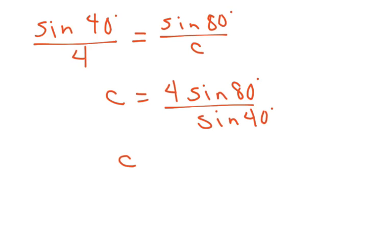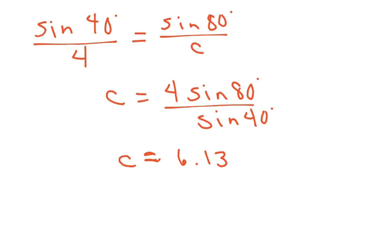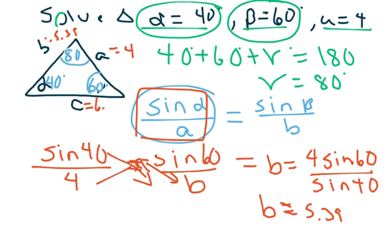And use your calculator, and you should get approximately 6.13. And then you put it back on your triangle, 6.13, and just kind of look, the side across from 40, the smallest angle should be the smallest side, and so on.